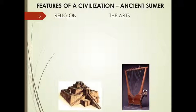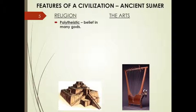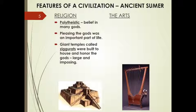Religion is also an important part of civilization, and in ancient Sumer their religion was polytheistic — a word meaning belief in many gods. The other important word to know is monotheistic, which is belief in one god; in this case, the Sumerians were polytheistic. Pleasing the gods was an extraordinarily important part of their daily life, and pretty much most of their activities were geared towards making sure the gods were happy. There were giant temples in the middle of every city-state called ziggurats, built to house and honor the gods — extremely large, imposing buildings that hovered over the entire city.